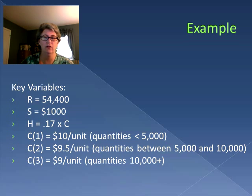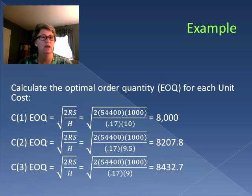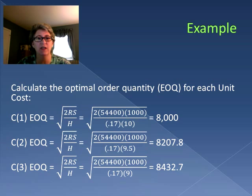We're going to calculate the EOQ for each unit cost. For $10 we get an EOQ of 8,000 units. For $9.50 we have an EOQ of 8207.8. And for $9 we have an EOQ of 8432.7.